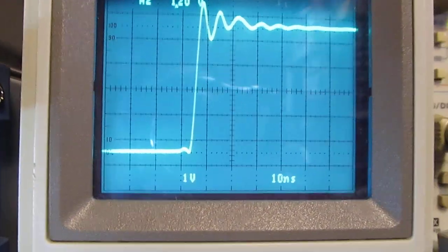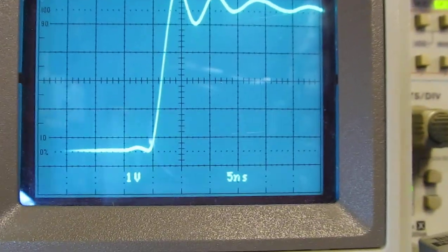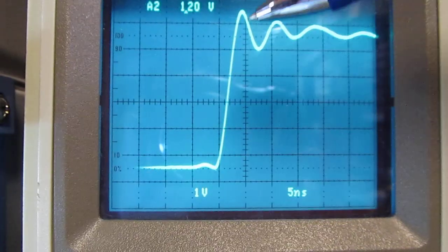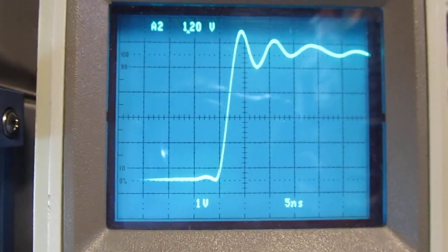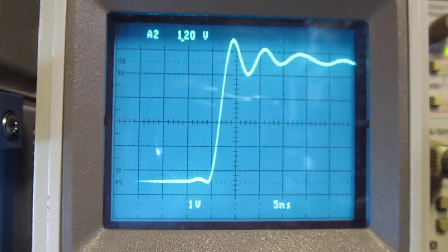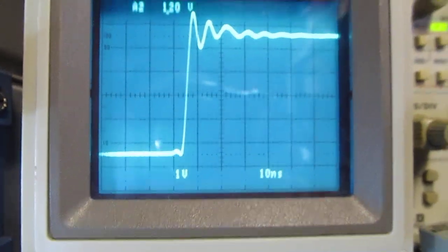If we look here at five nanoseconds per division, I can see that I'm rising up here in about two to two point two nanoseconds from a 10 to 90 percent standpoint. It's a pretty fast edge. So we can use this as a TDR.